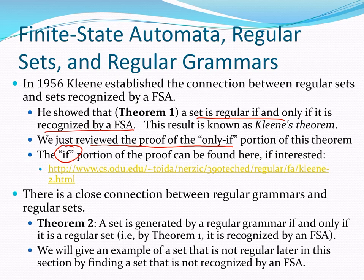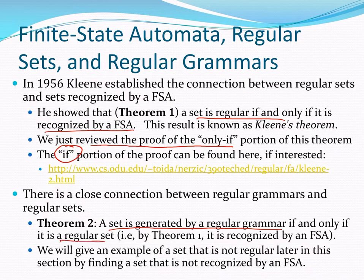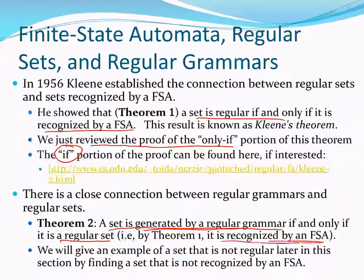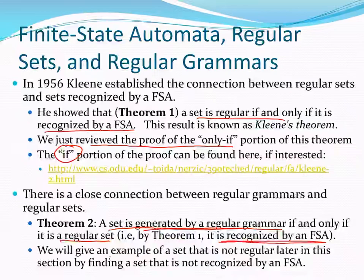Let's look at theorem two. It says that a set is generated by a regular grammar if and only if it is a regular set. We're going to restate that a little bit because we have theorem one. A set is generated by a regular grammar if and only if it is recognized by a finite state automaton. Because we have theorem one, that is an equivalent statement, and we will use that formulation to do our proof.